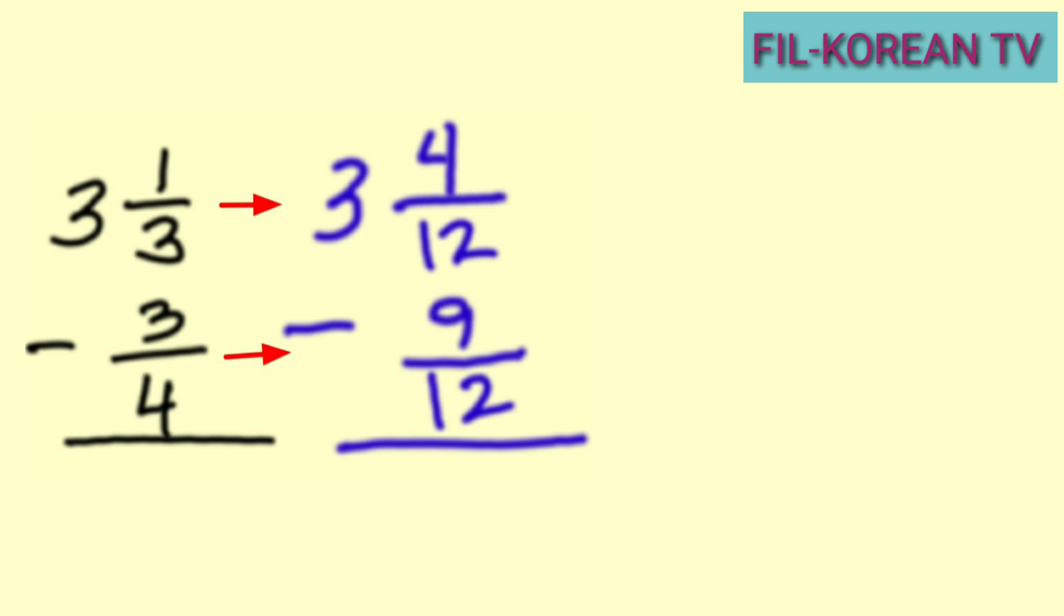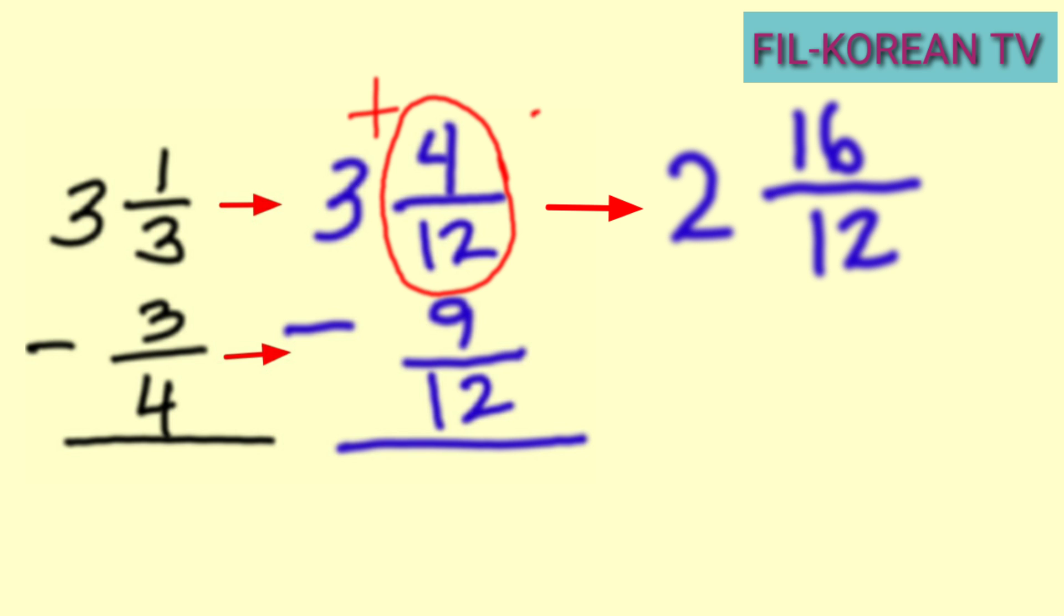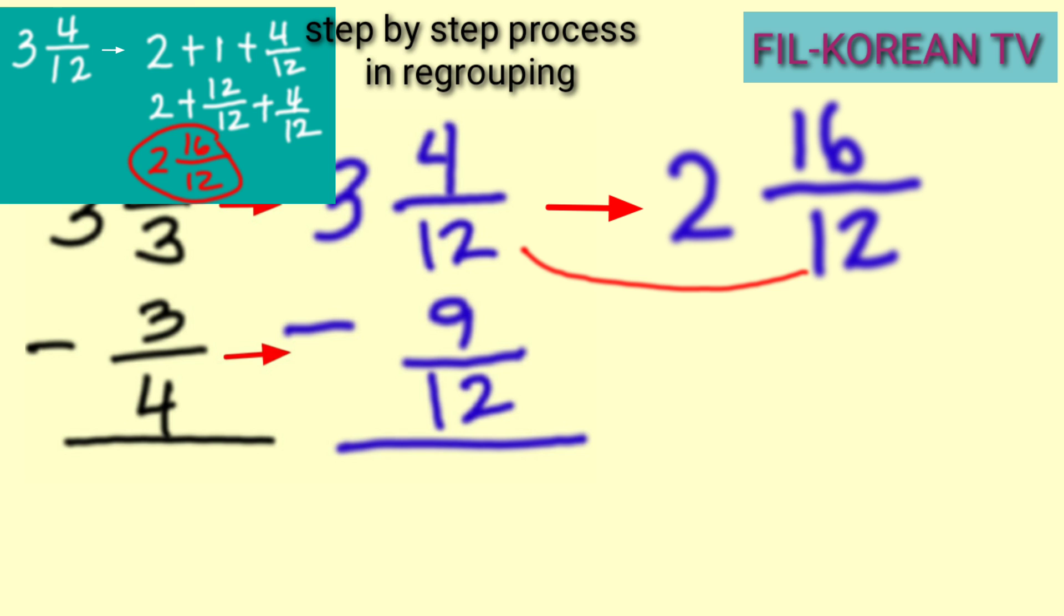Let's do it. If we minus 1 from the whole number 3, the answer is 2. And then, if we add 4 plus 12, the answer is 16. So 16 is the new numerator. And copy the denominator, 12. So 3 and 4 twelves becomes 2 and 16 twelves.